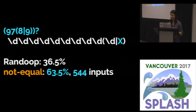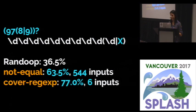And this is already an improvement. But it struggled with a few cases. So in a minute, it generated 544 inputs. But it had a lot of trouble hitting some of these cases, like the x at the end, or the question mark at the beginning. So we then used a more advanced constraint called cover regex. And cover regex is a constraint that's implemented using enumerate that actually considers the structure of the regular expression. And using that constraint, we were able to achieve 77% coverage in only six inputs.